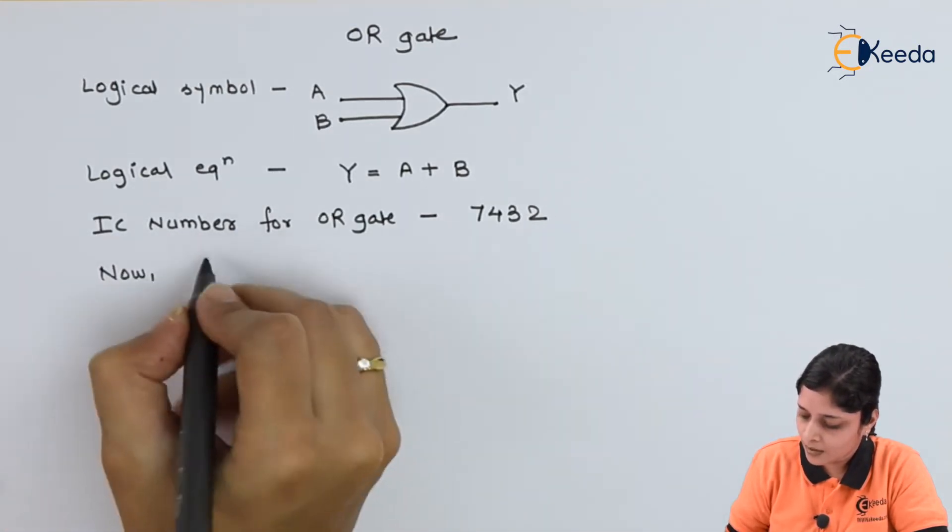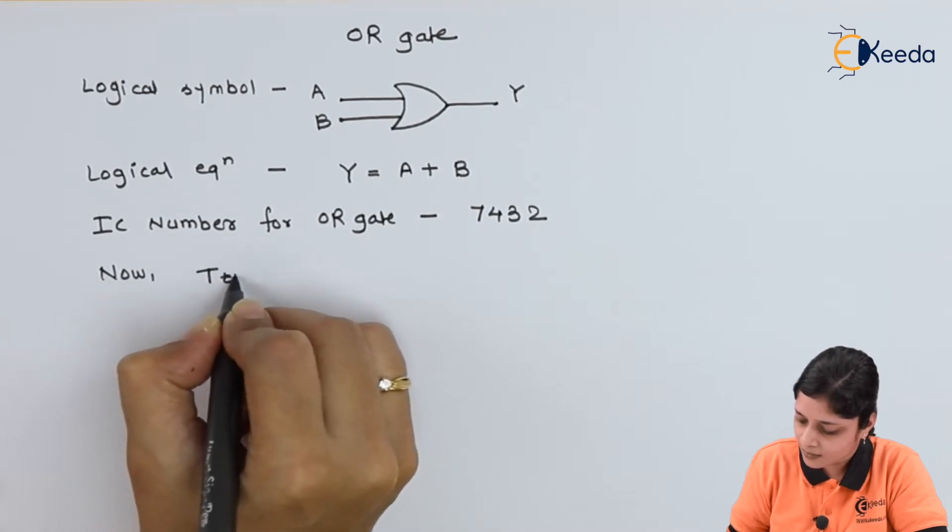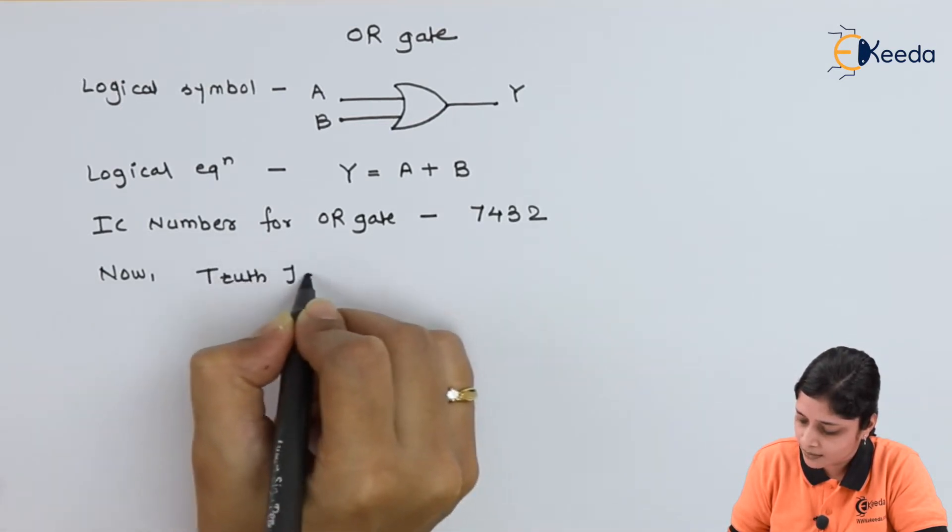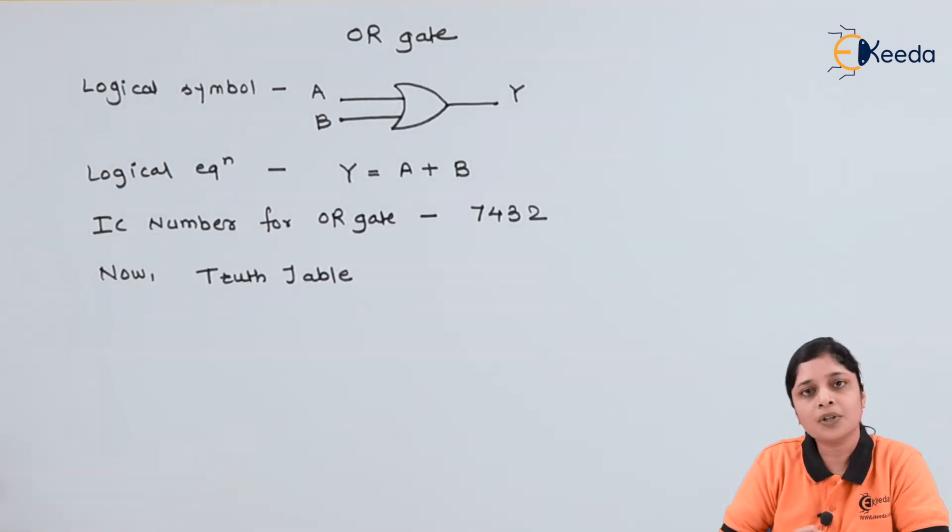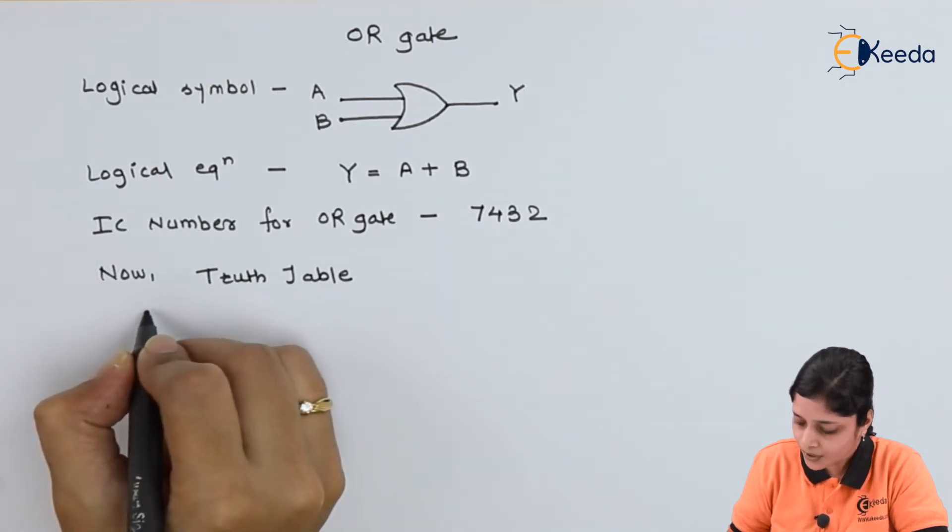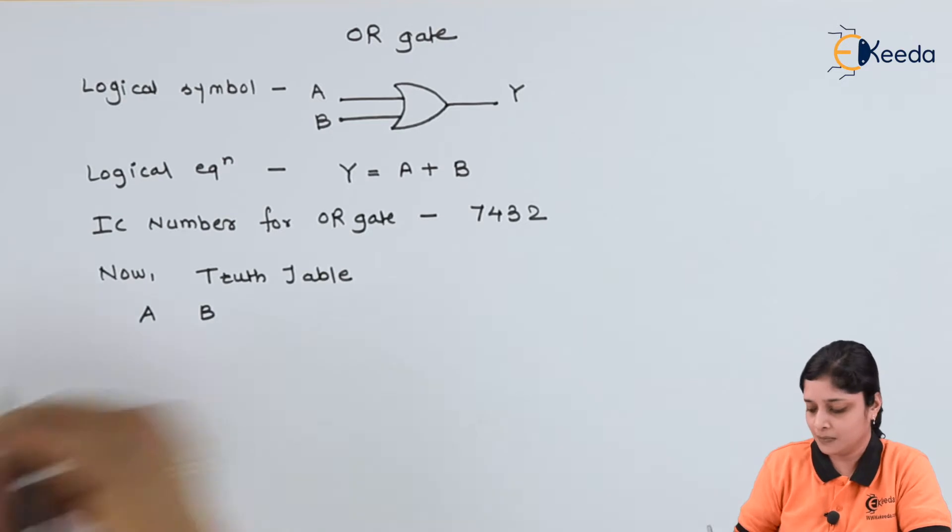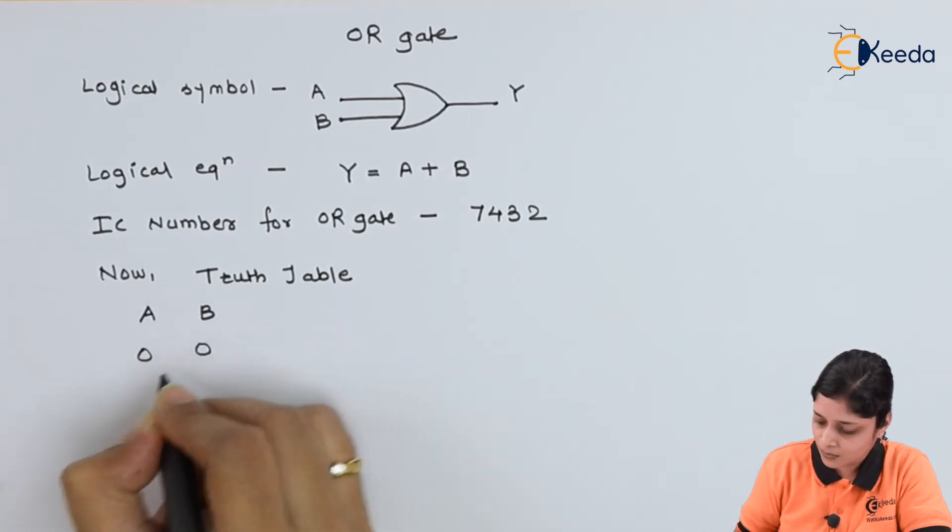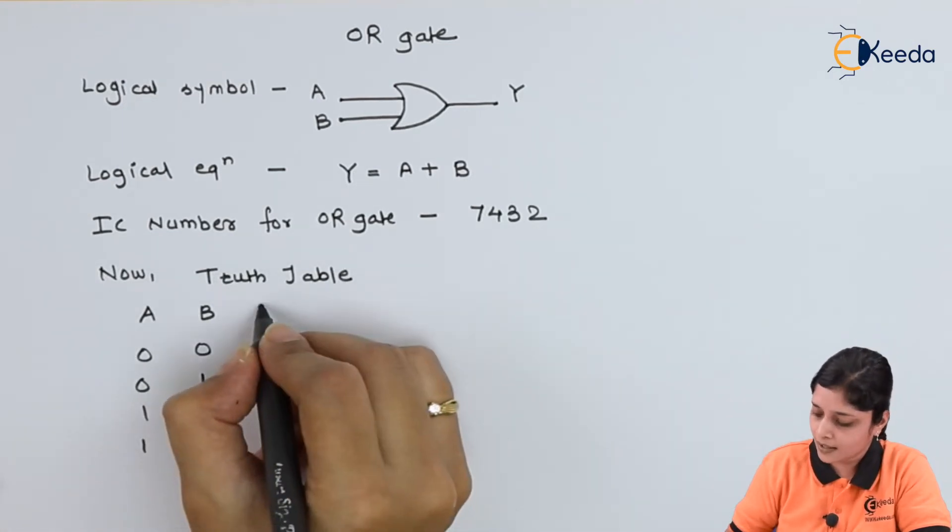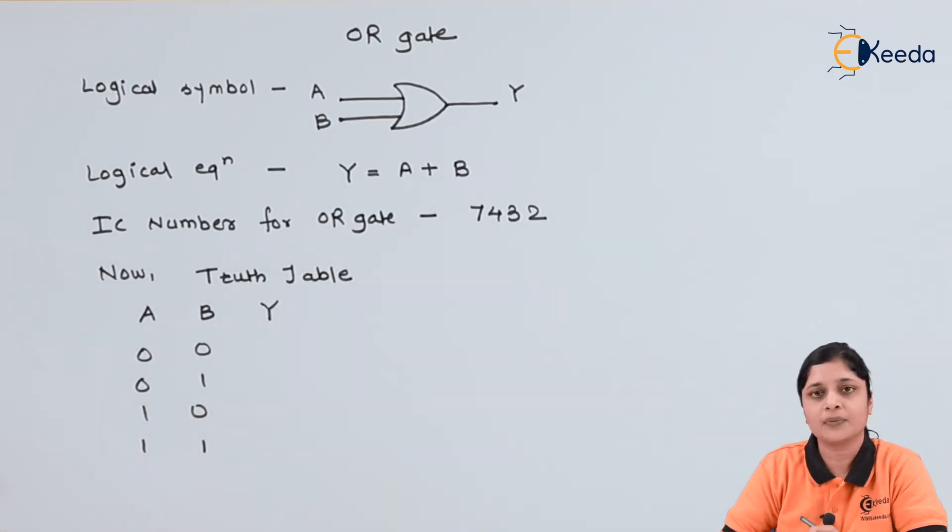Now we will write the truth table. Truth table is nothing but the possible combinations of inputs to get the final output. We have two inputs, so possible combinations we will get here are four: 0,0 and 0,1 and 1,0 and 1,1. At the output we will write Y.